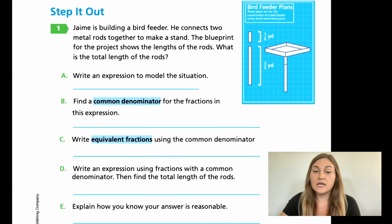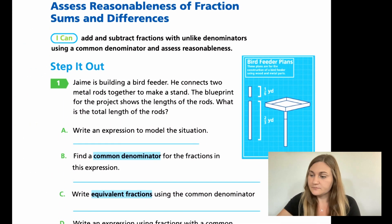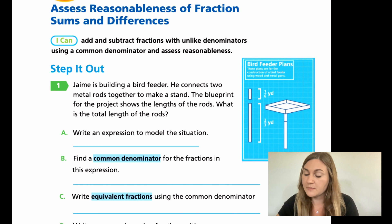All right, so jumping into the lesson on page 153, we're going to start with this problem. It says Jamie is building a bird feeder. He connects two metal rods together to make a stand. The blueprint for the project shows the lengths of the rods. What is the total length of the rods? So over to the right in the blue square, it shows the smaller piece is one-sixth of a yard, and the longer piece is two-thirds of a yard.